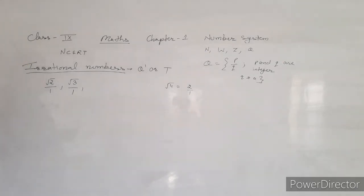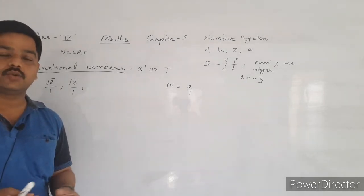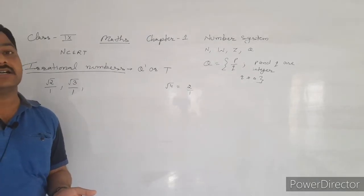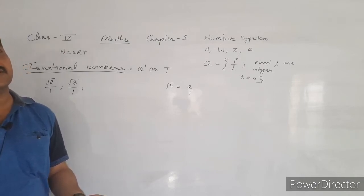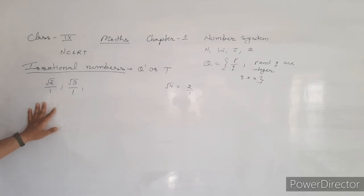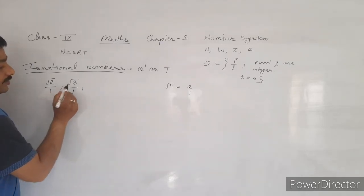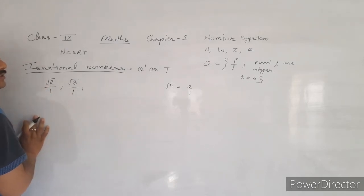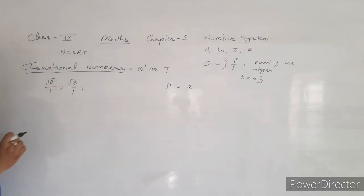Numbers whose square root we can easily calculate — like root 9, root 1, root 16, root 25, root 36, root 49, root 81, root 100 — these are all rational numbers. But numbers whose square roots we cannot easily find are called irrational numbers. Every number in which we cannot find the square root as an integer form is called an irrational number.